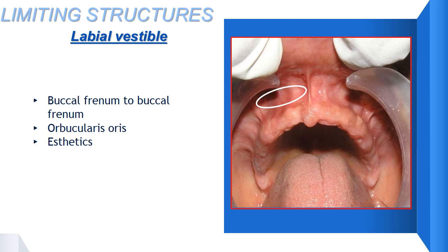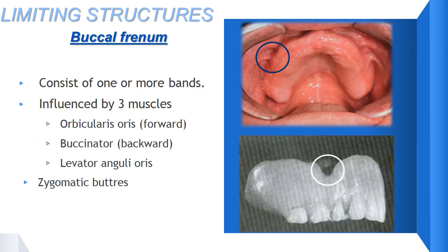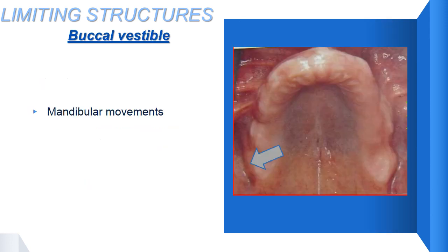The next limiting structure is the labial vestibule, which extends from one buccal frenum to the other buccal frenum, and this space is influenced by the orbicularis oris muscle. That is why, when performing the border molding and muscle compression procedure, we activate this muscle by manipulating the upper lip — proper extension in depth and width is important for aesthetics. The buccal vestibule is another limiting structure at the distobuccal area of the maxilla, influenced by the coronoid process of the mandible. We ask the subject to move the mandible laterally and open the mouth wide to record this area. Any overextension here leads to dislodgement of the maxillary denture.